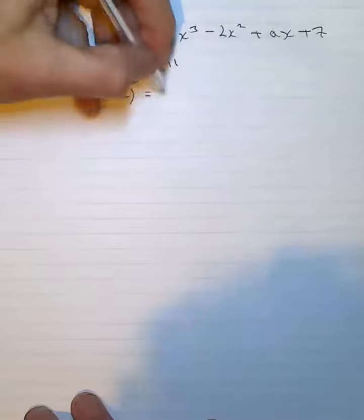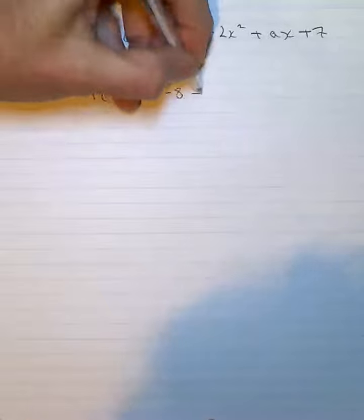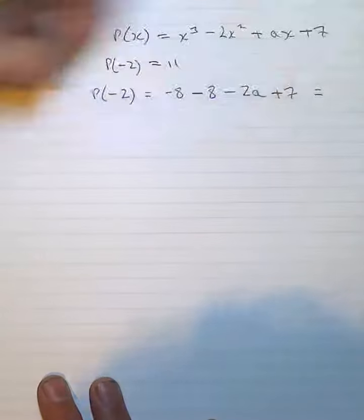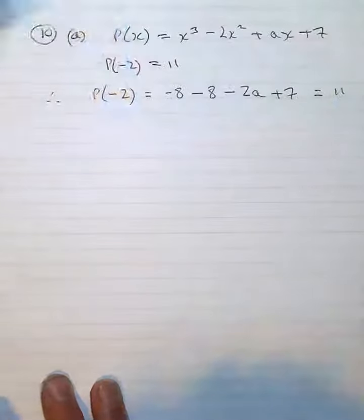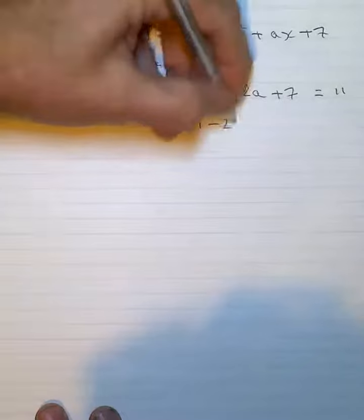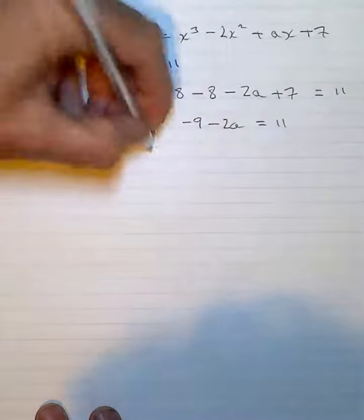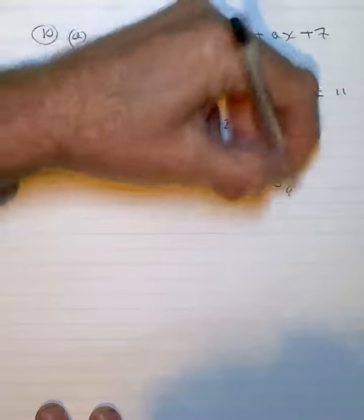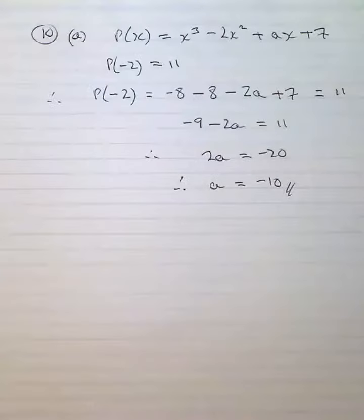So what I've got to do now is substitute negative 2 in and work it through. So I've got negative 9, take 2a is equal to 11, and a, therefore, will equal negative 10.